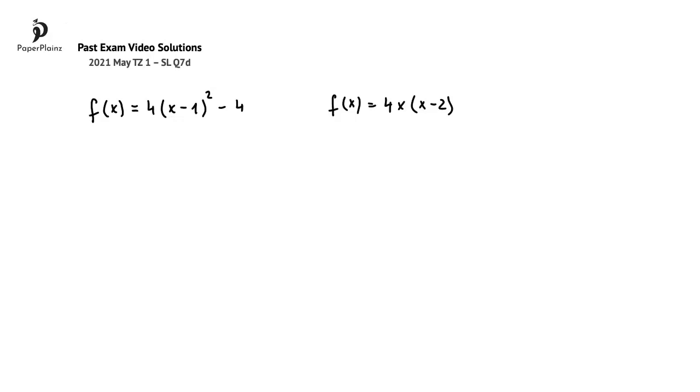In question part c, we found that f(x) can be written in this form. This form is sometimes called the vertex form, and it shows us that the vertex of f(x) is at (1, -4).